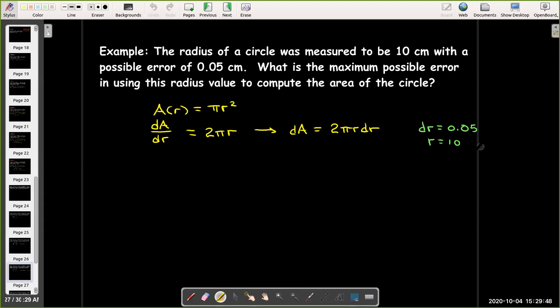The r is 10. And we can calculate that the maximum possible error in the calculation of the area is pi square centimeters.